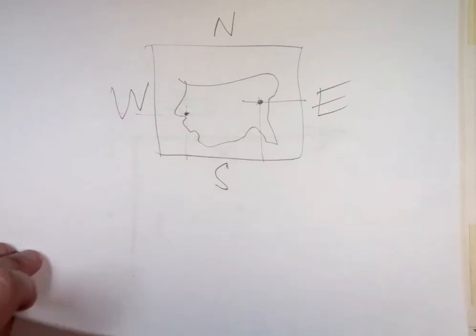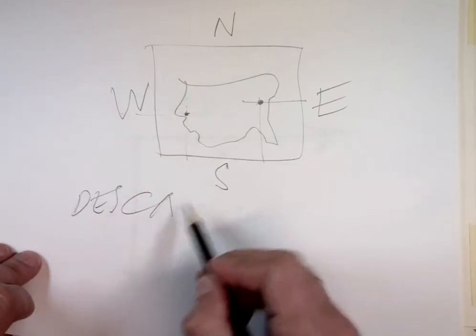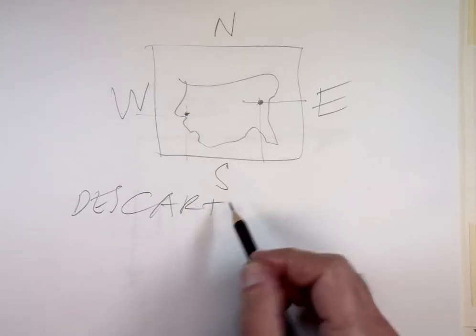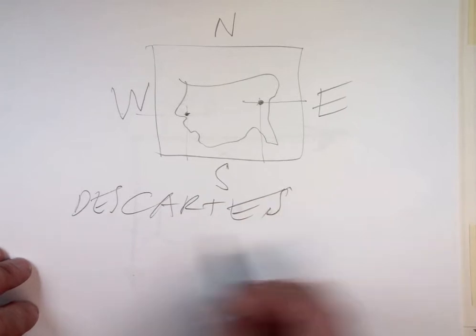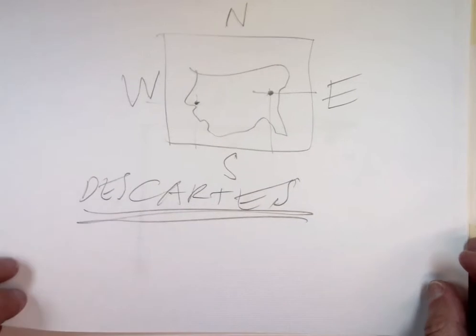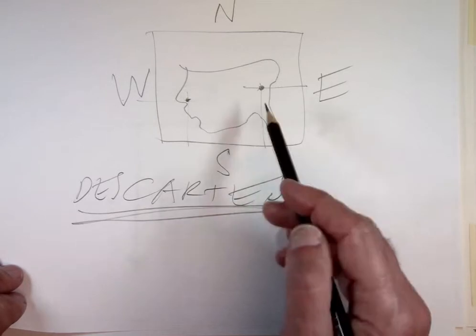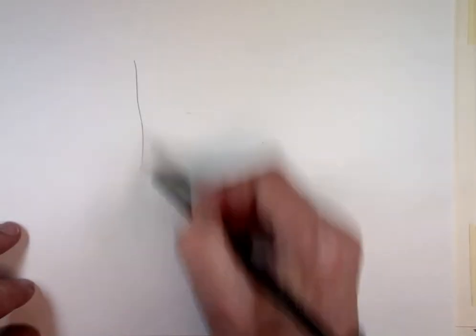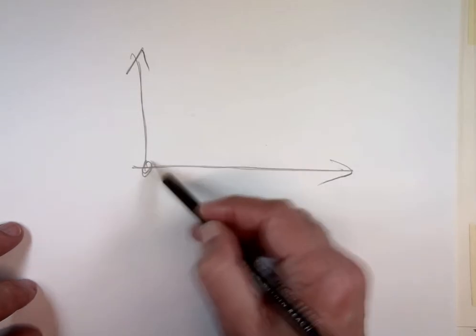It wasn't really until Descartes — the guy behind Cartesian coordinates, the guy who said 'I think therefore I am' — that we got the idea that you can not only plot geographic stuff on the two axes, but you can plot data. So I'm going to show one last example of that.